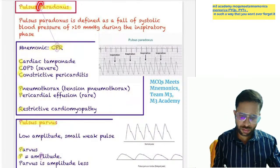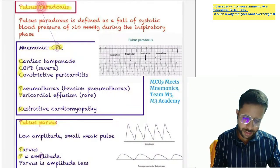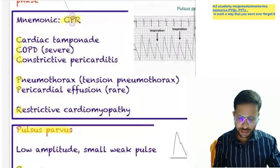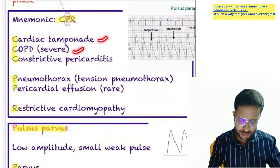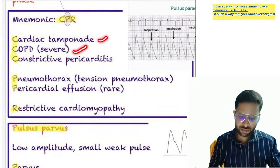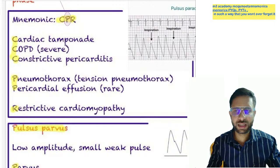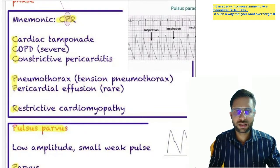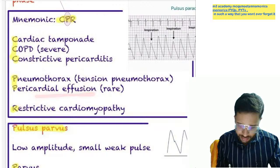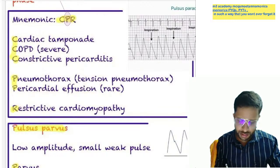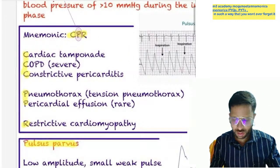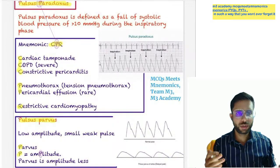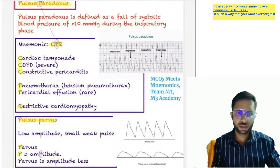Where is pulsus paradoxus found? Remember the mnemonic CPR: C for cardiac tamponade, P for COPD, R for restrictive cardiomyopathy, and also constrictive pericarditis and tension pneumothorax. Pericardial effusion is a rare cause. So just remember — cardiac tamponade, pneumothorax, and restrictive cardiomyopathy.